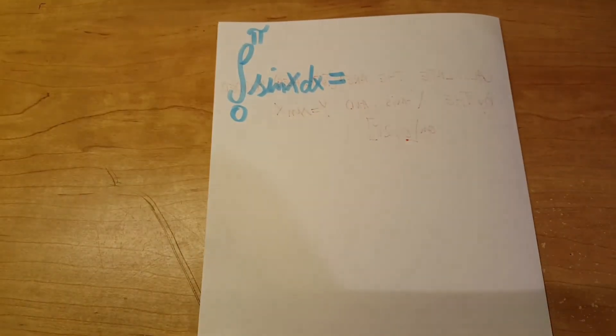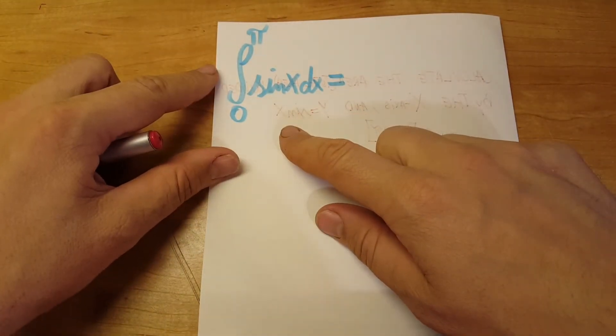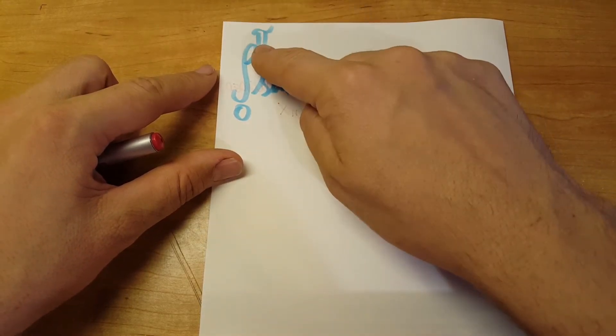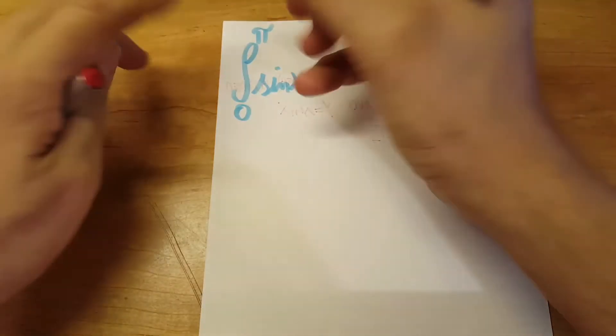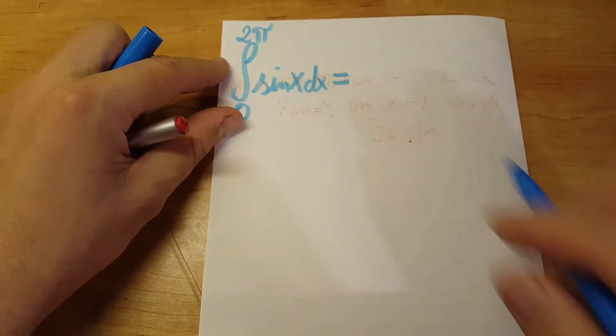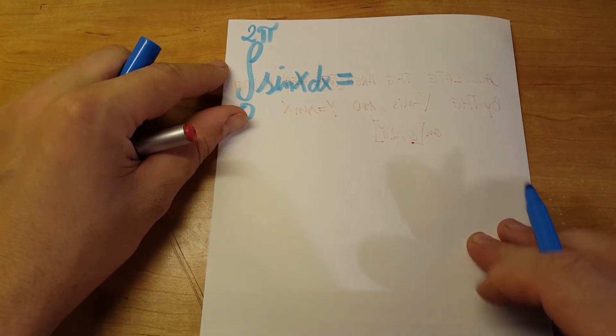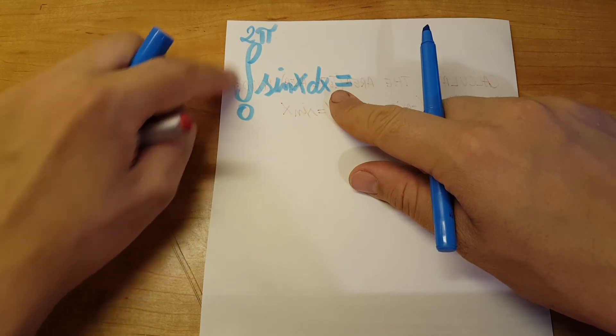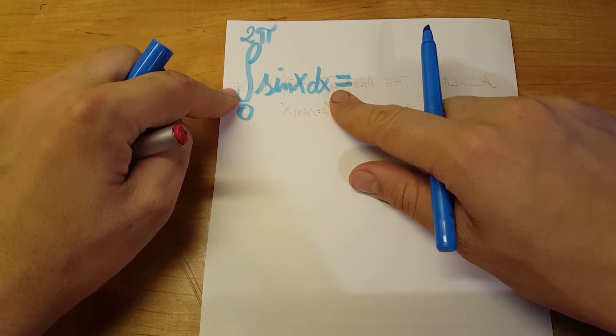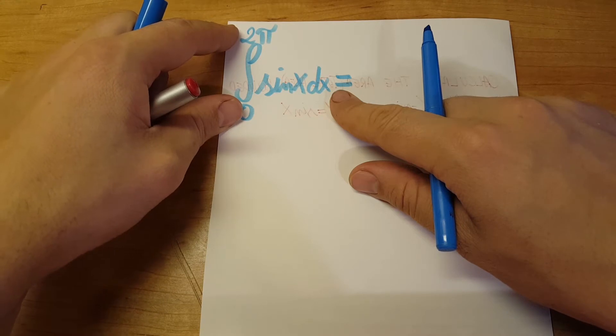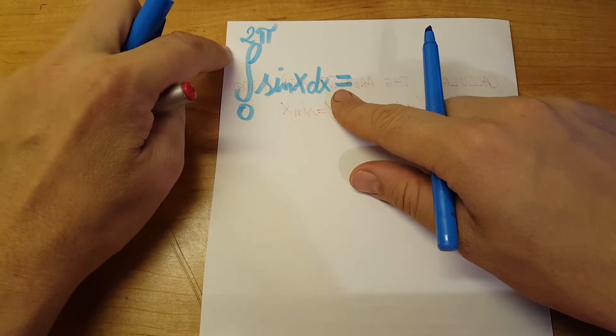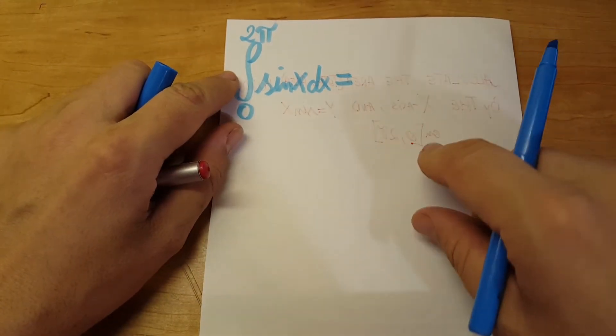Well, we would do an integral from zero to two pi. This will give us the net area between the two, and we're gonna do a little adjustment to make sure we get the total area. Let's get to it.